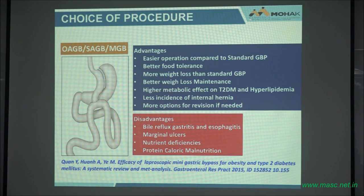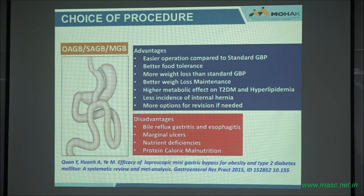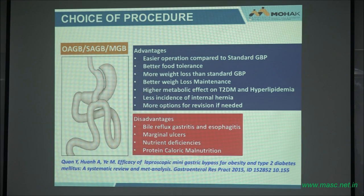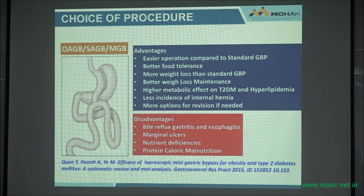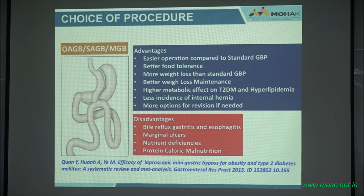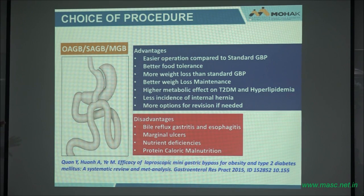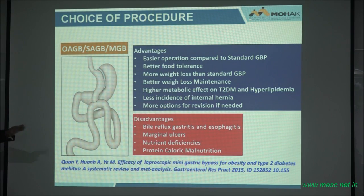The MGB has slightly better weight loss, better resolution of type 2 diabetes and hyperlipidemia, less incidence of internal hernia, and more options for revision. When a patient has a complication with the MGB, it's very easy — you just go down and transect that gastrojejunostomy. You can make it into a gastric bypass. So for that reason, this is becoming very popular. The disadvantages are there is a problem with bile reflux gastritis and bile reflux esophagitis.